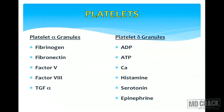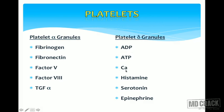As time advances, tertiary hemostasis takes place. Platelets have plenty of granules — alpha granules and delta granules. Alpha granules contain fibrinogen, fibronectin, Factor V, Factor VIII, and transforming growth factor beta. Delta granules contain adenosine diphosphate (ADP), ATP, calcium ions, histamine, serotonin, and epinephrine.